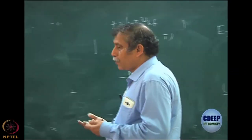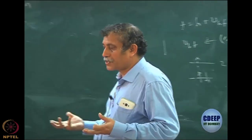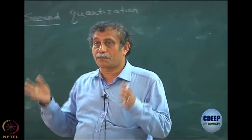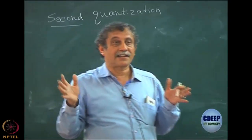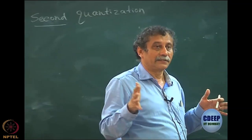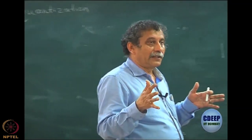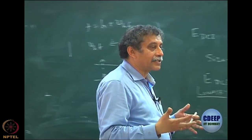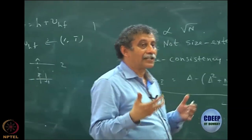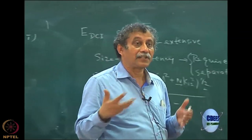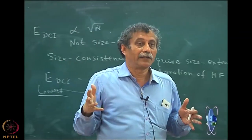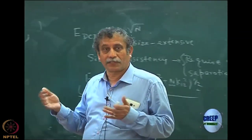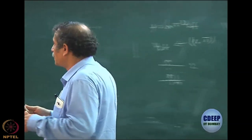Similarly, when we write the wave function for fermions, we have to explicitly write a Slater determinant. In second quantization, even that is not explicitly required — it is automatic formation. So these are some of the advantages: simplification of writing the wave function and expression of the operators.